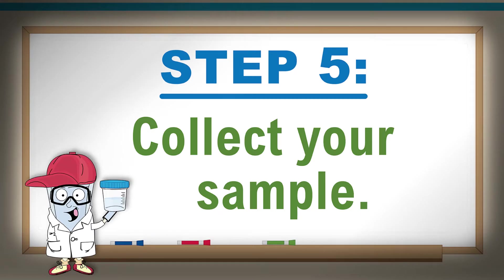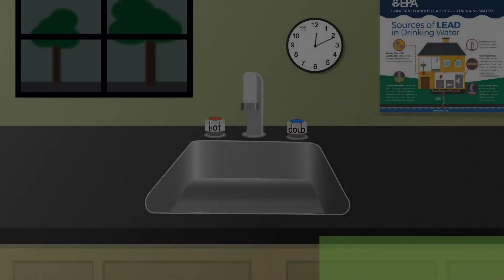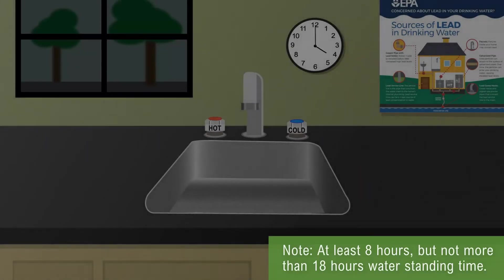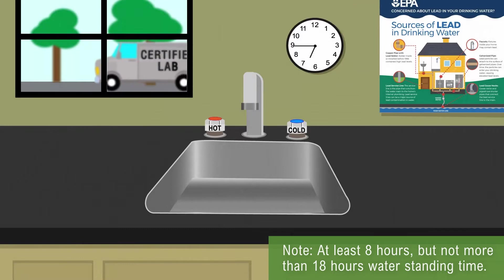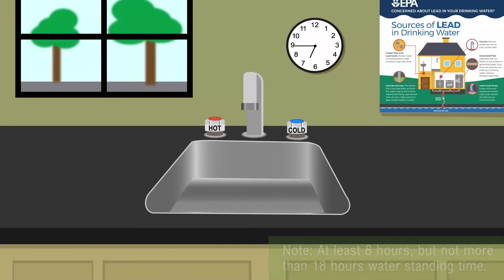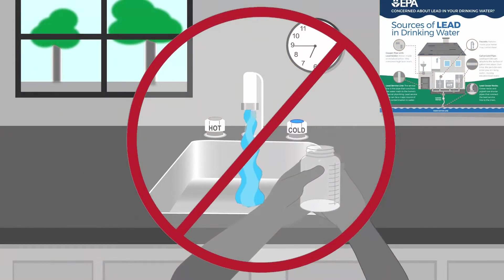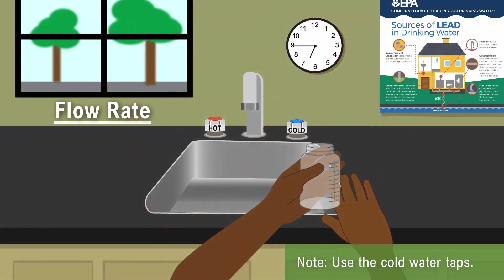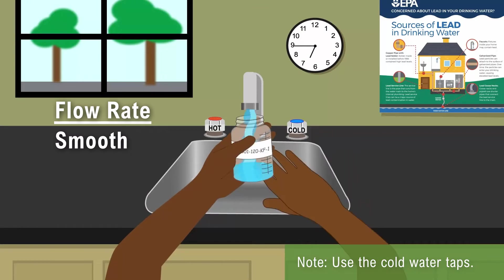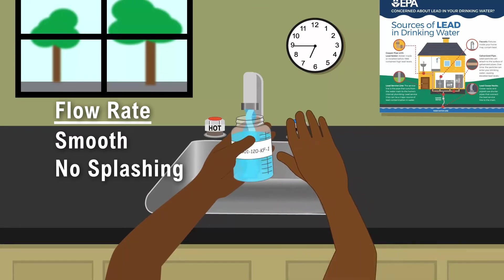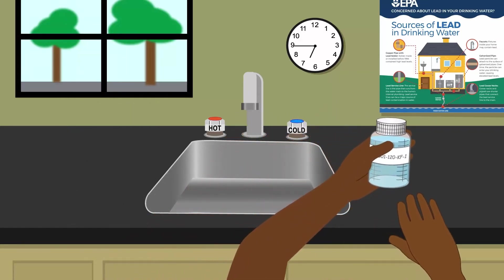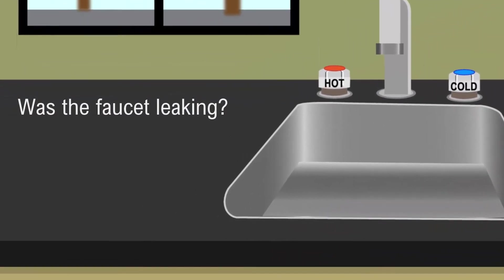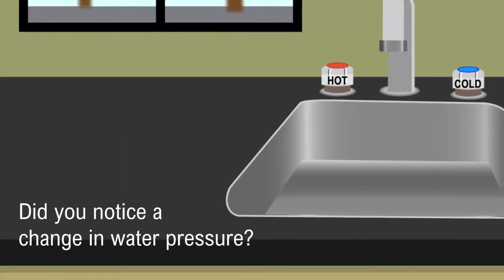Step 5: Collect your sample. To conduct a first-draw sample, water should be sitting in the pipes for at least 8 hours but no more than 18 hours prior to sampling. These samples are typically collected in the morning, before the facility opens and before the fixtures have been used. Do not flush the fixture by running the water before collecting your sample. The first-draw sample is collected immediately upon turning on the water — place the container under the fixture or faucet, then turn the water on. Fill the 250ml container to the top but do not allow the water to overflow. Secure the lid and set it aside. Be sure to record any observations in your sampling form, for example, whether the faucet was leaking, if there was water discoloration, or if you noticed a change in water pressure.